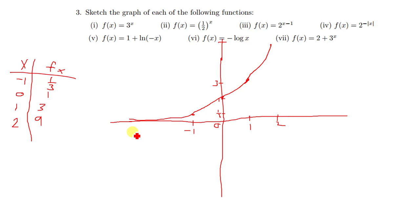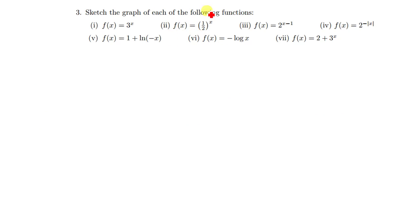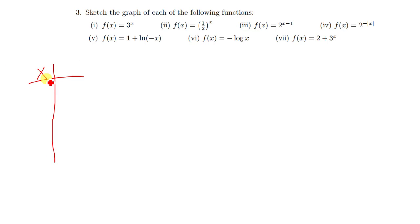Let's quickly move on to the next question. f of x is equal to one-half raised to the power of x. You do the same — you draw the table of values. You have x there and y or f of x on the other side. Starting with negative two, we're going to have four as our answer.